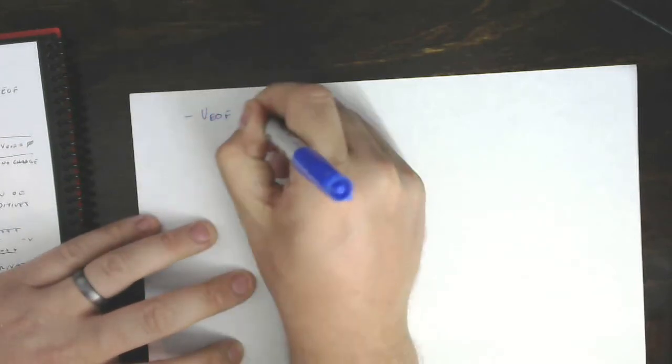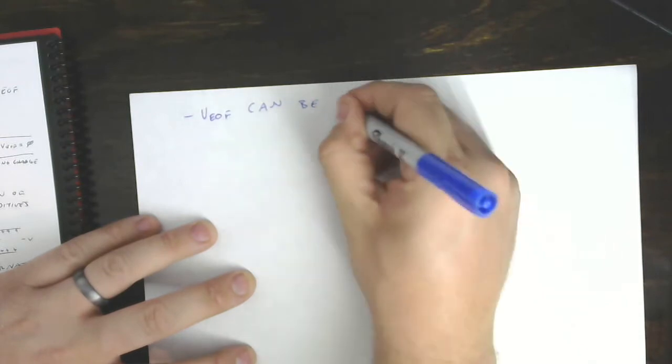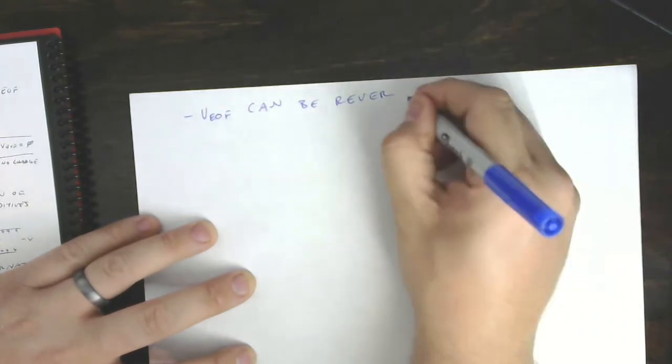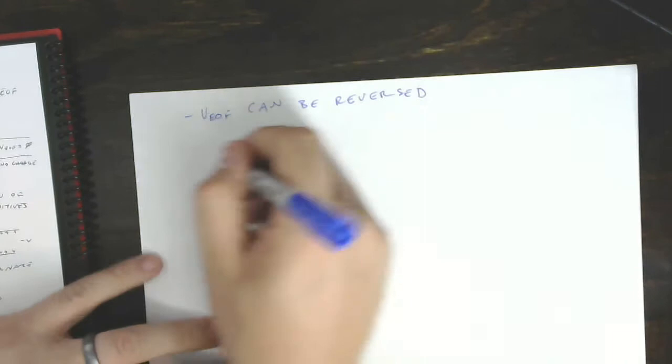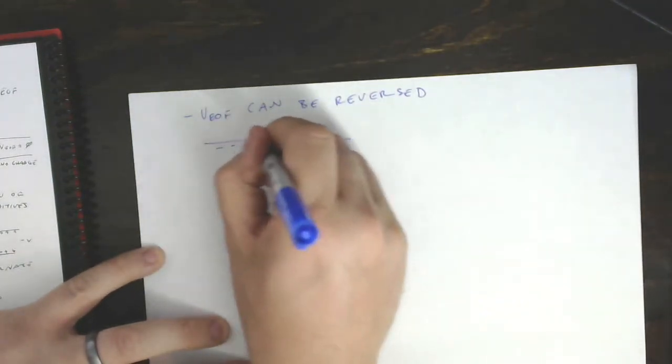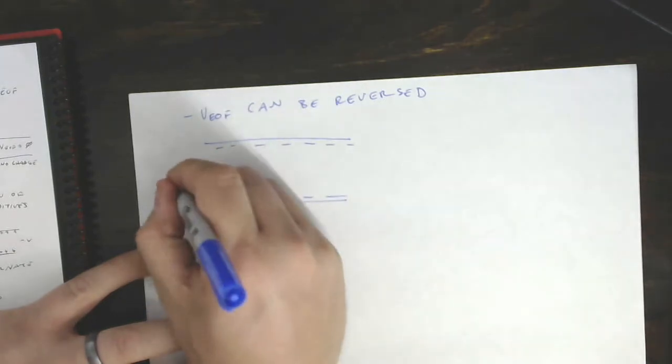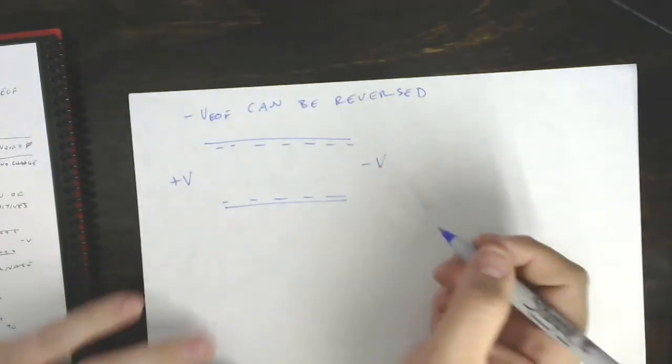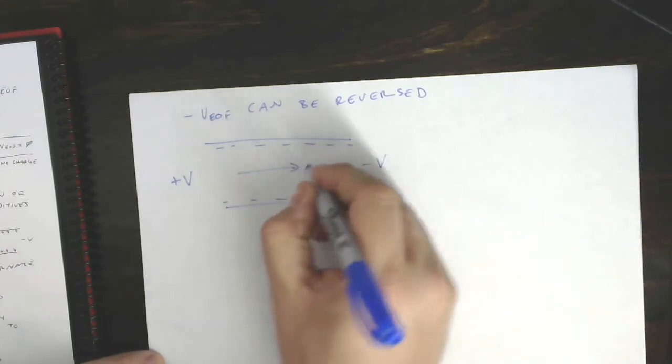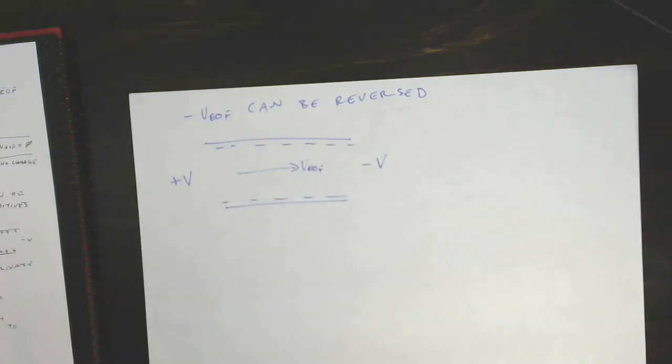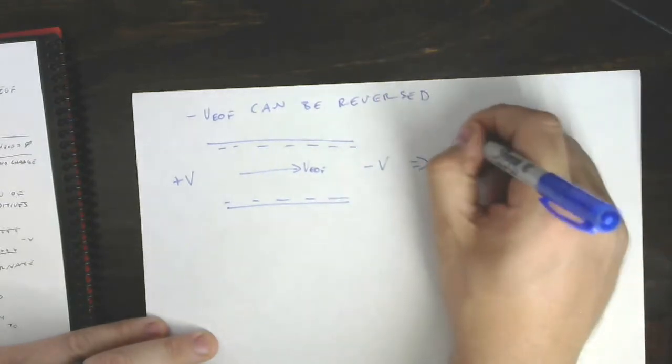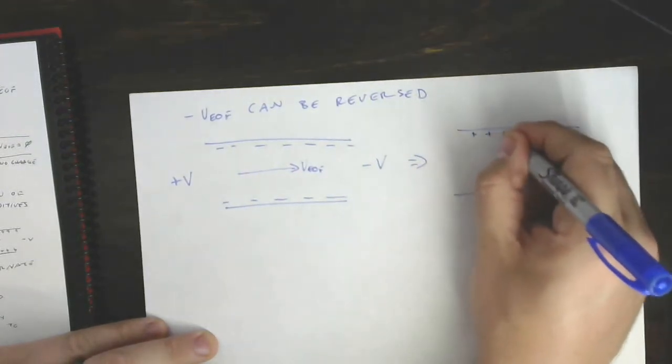We can do another kind of neat thing in a very similar way. So we can reverse, we can take velocity EOF and we can reverse it. How would we do that? Well, here's our standard capillary. It's got negative charge on the wall. We apply a positive voltage over here and a negative voltage over here, and as we've learned it, that makes V_EOF go in that direction.